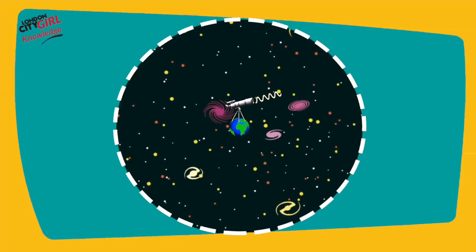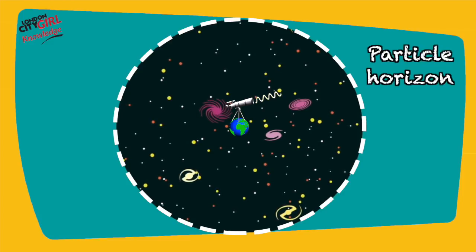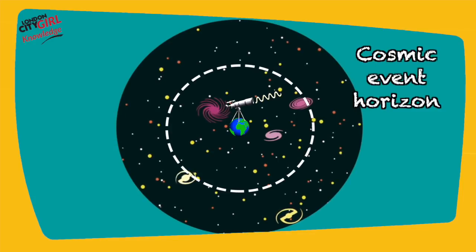The circumference of our known observable universe is called the particle horizon. The particle horizon is not to be confused with the cosmic event horizon.